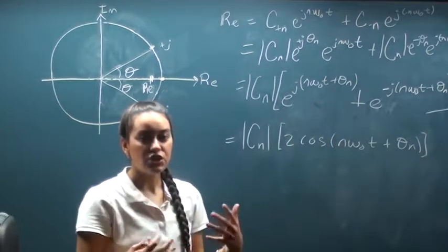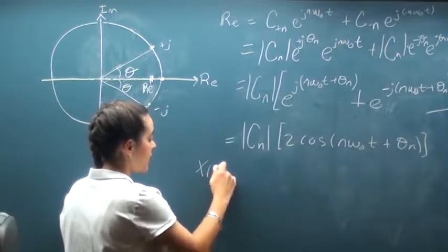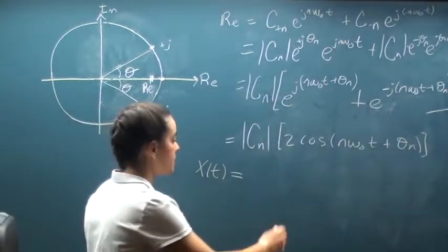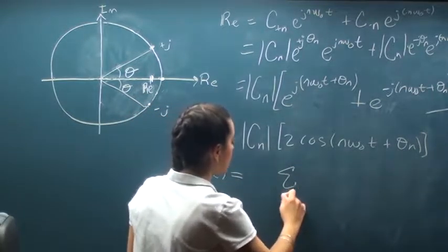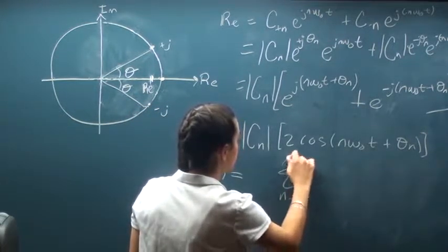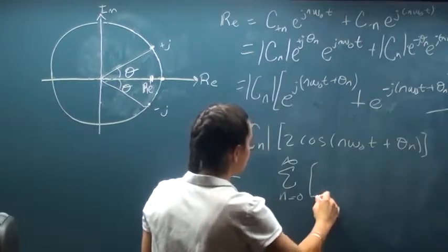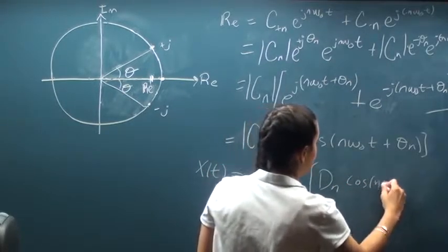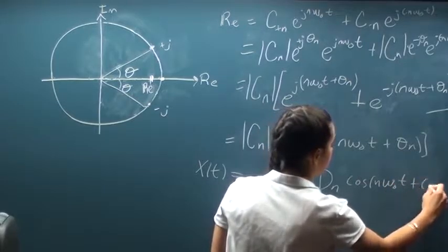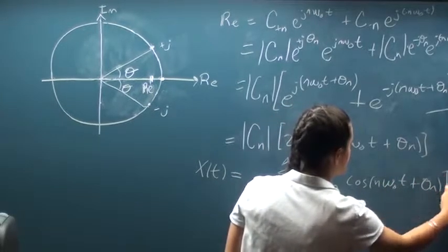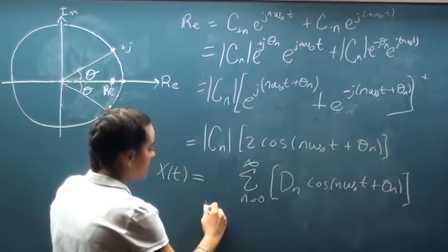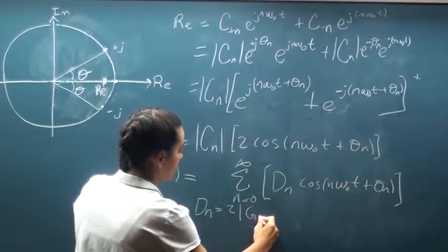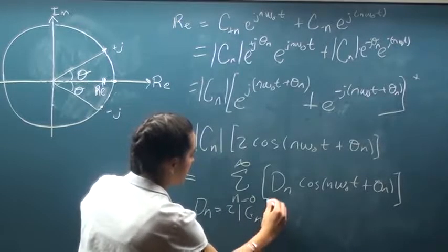And as a generic representation for our function in the time domain, we can write this in terms of a sum. So we get the sum from n equals zero to infinity of dn cosine n omega naught t plus theta n, where dn here is going to be equal to 2cn.